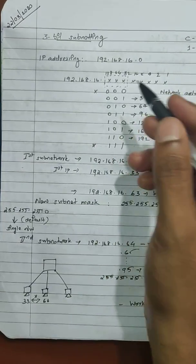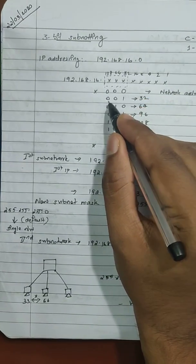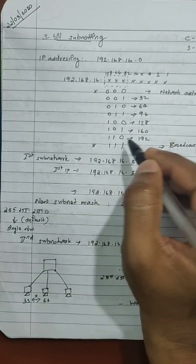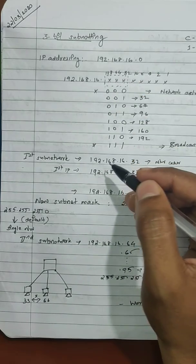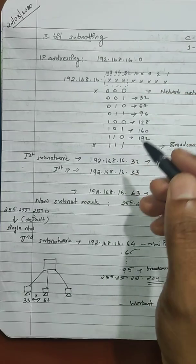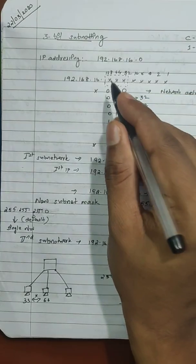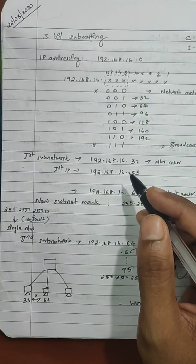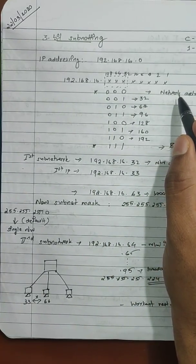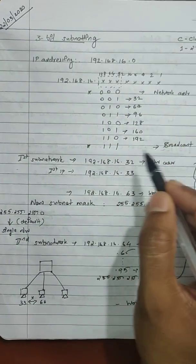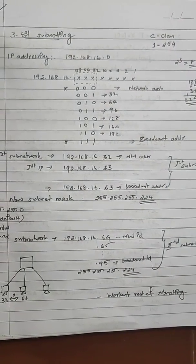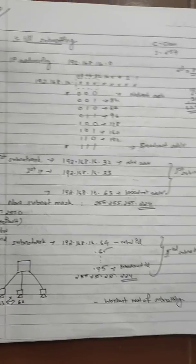For these 3 bits, we have the combinations: 000, 001, 010, 011, 100, 101, 110, 111. These are the possible combinations of values we get from these 3 bits. As we know, the first address and the last address — the first is for the network address and the last is for the broadcast address — so these 2 addresses will not be taken for creating the subnet.